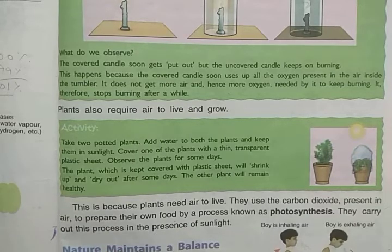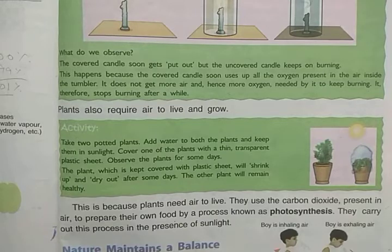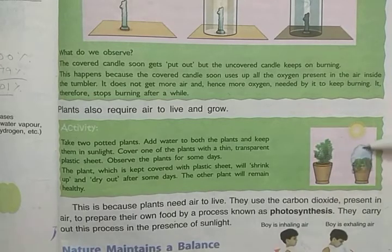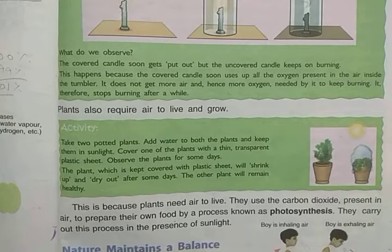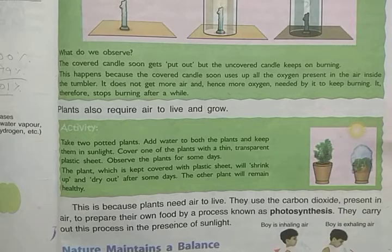Take two potted plants — as you can see in the picture. Add water to both plants and keep them in sunlight. Now cover one of the plants with a thin transparent plastic sheet. You can see in the picture: one plant is covered and the other is left open. Observe the difference in both plants after a few days.